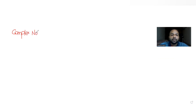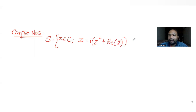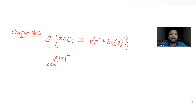Hi guys, I hope you are all doing well. Today's question is from the topic of complex numbers. The question tells us that S is a set of z which belongs to complex numbers, with the condition that the conjugate of z equals i times z squared plus the real part of the conjugate of z. We need to find the value of the summation of mod of z squared, where z belongs to all complex numbers from set S.